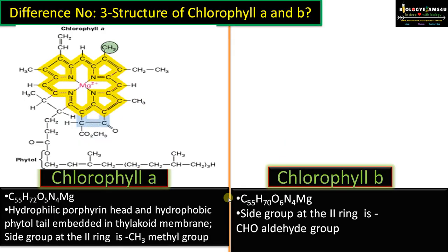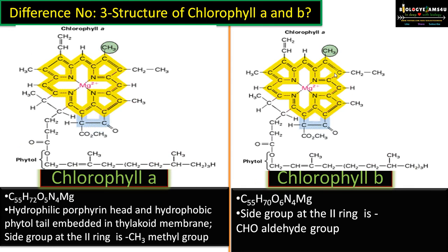In the case of chlorophyll B, the only difference is that the side group at the second ring is an aldehyde in place of the methyl group. Therefore the chemical formula becomes C55H70O6N4Mg.